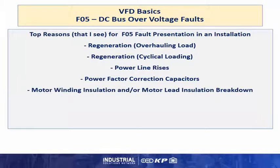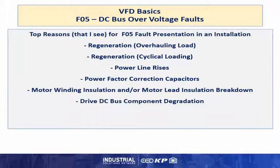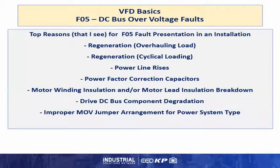Motor winding insulation and or motor lead insulation breakdowns can cause issues through the reflected wave phenomena. DC bus component degradation allows less absorption of energy back to the drive causing the trip point to be reached sooner. An improper MOV jumper arrangement for the power system type can add a ground and or common mode noise component back into the drive bus through that path, causing the DC bus voltage to rise.